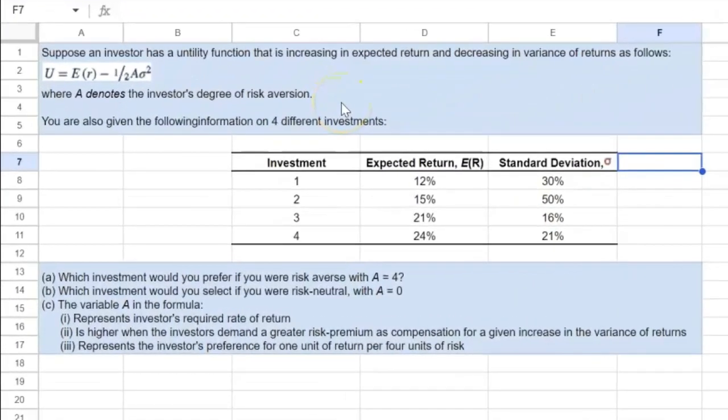Suppose an investor has a utility function that is increasing in expected return and decreasing in variance of returns as follows.